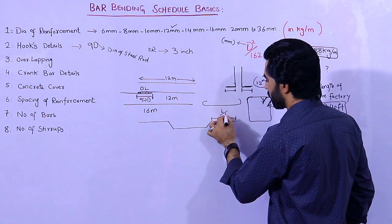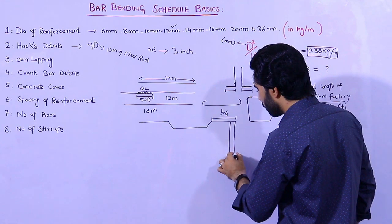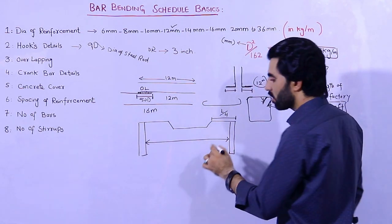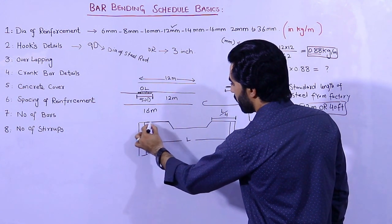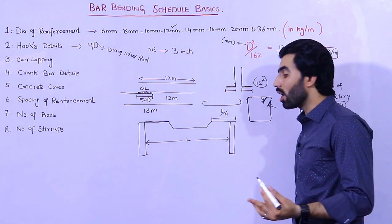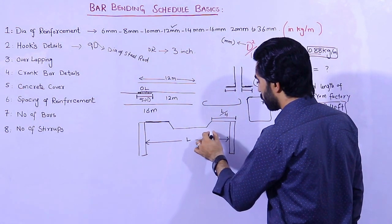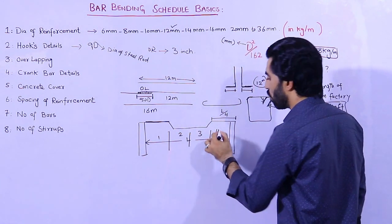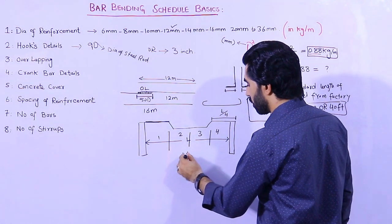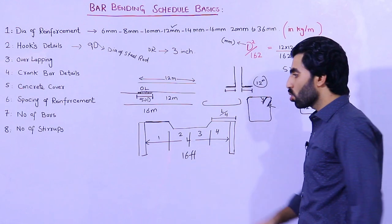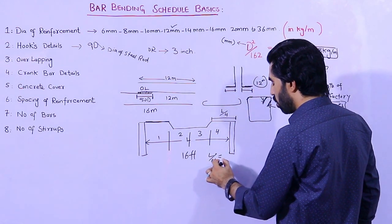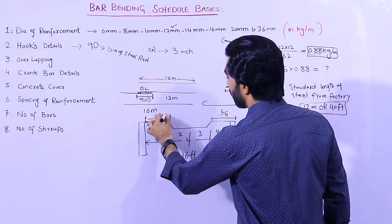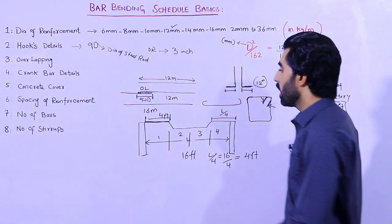The crank bar length is obtained from the L/4 distance. Suppose this is one column and this is another column — L is the span between two columns. The extra rod (crank bar) should be provided by L/4. For example, if the span is 16 feet, divide it into 4 parts. 16 divided by 4 gives 4 feet — so the crank length should be 4 feet and it should not be less than 4 feet.